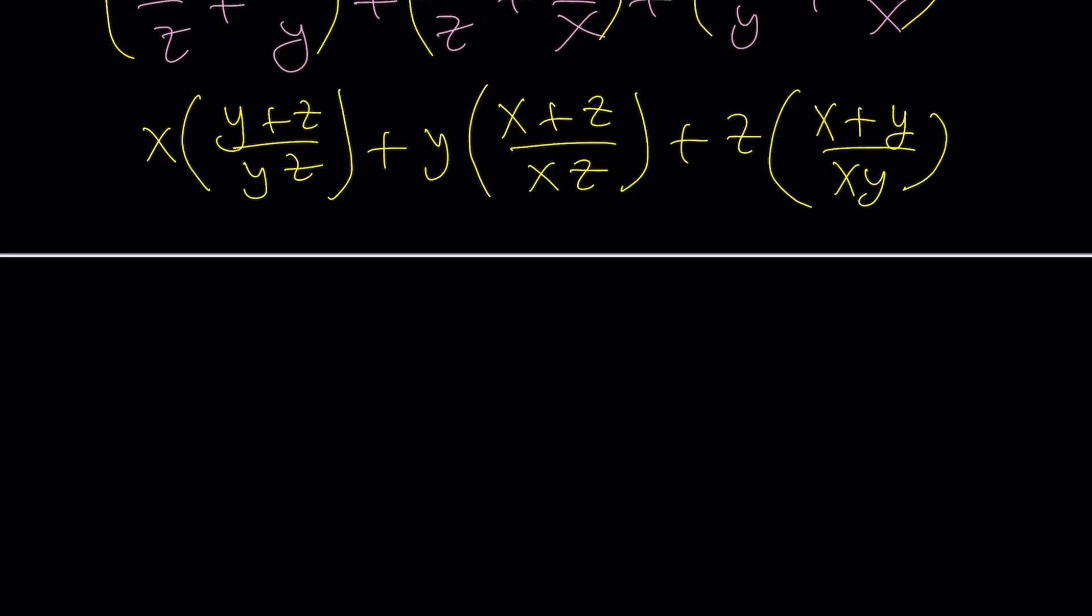And then what do you do next? Good question. We kind of need to distribute, because that's going to give us xy plus xz over yz. And then xy plus yz over xz. And then finally, xz plus yz over xy.